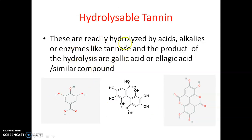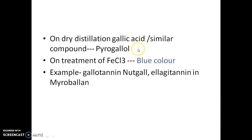Hydrolyzable tannins are easily hydrolyzed by acids or enzymes to produce gallic acid, hexahydroxydiphenic acid, ellagic acid, or similar compounds. On dry distillation, the gallic acid produced yields pyrogallol. On treatment with ferric chloride, this type of tannin shows a blue color. Examples are gallotannin in nutgall and ellagitannin in myrobalan.